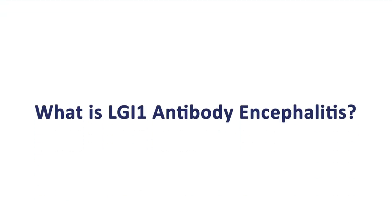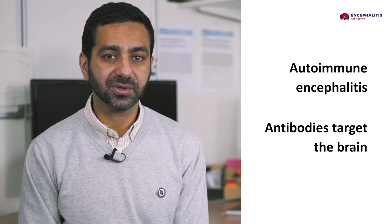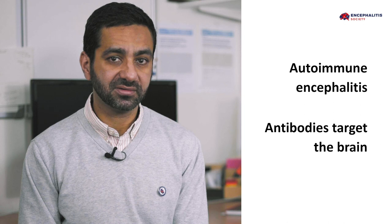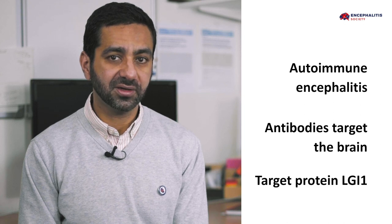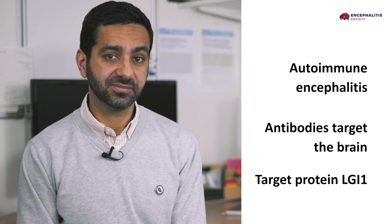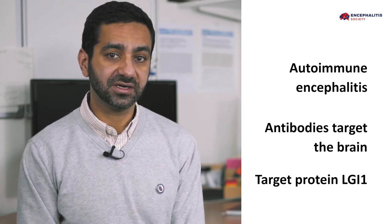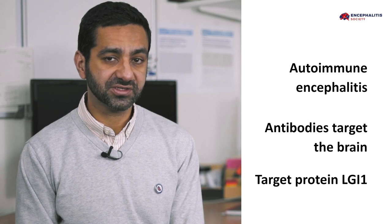I'm Surash Arani, a neurologist in Oxford. I run the Autoimmune Neurology group here and our main research focus is encephalitis. LGI1 antibody encephalitis is an autoimmune form of encephalitis caused when antibodies target the brain. The antibodies in this case target a protein called LGI1. Antibodies are normally meant to be protective, particularly against infection, but in this disease they erroneously target our own brain protein, LGI1.